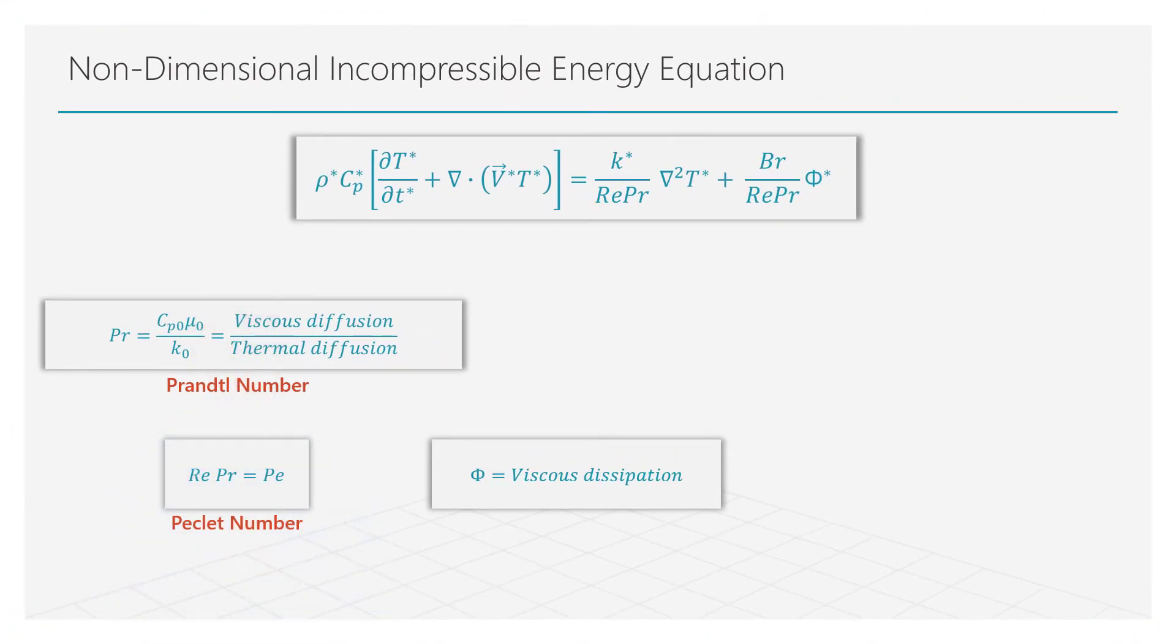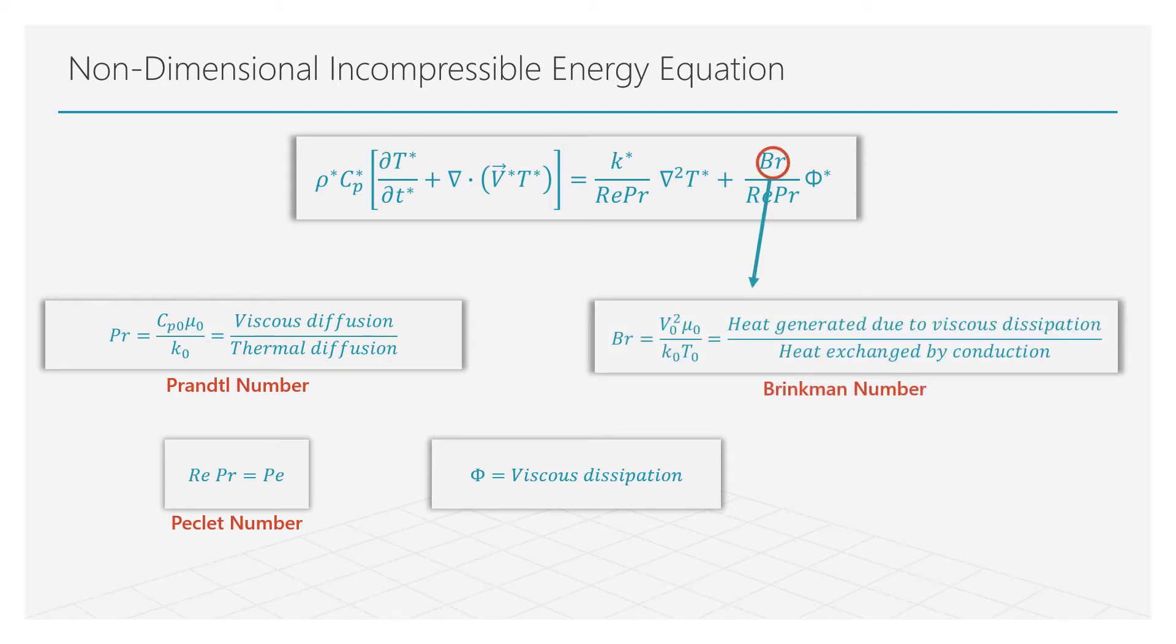Let's analyze now the viscous dissipation term. There the Brinkman number appears. This number is representing the ratio of the heat generated due to viscous dissipation to the heat exchanged by conduction. The ratio of the Brinkman number to the Prandtl number is sometimes defined as the Eckert number.